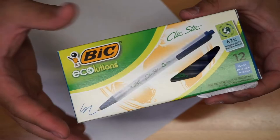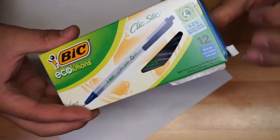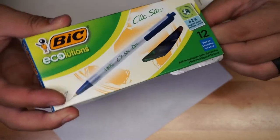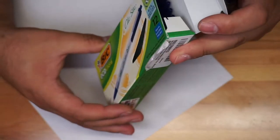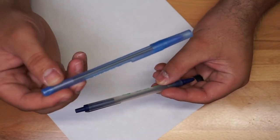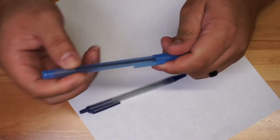So we're going to open it up. Like I said, you're going to have 12 of them in the box and we're just going to get one of them out. This is going to be retractable, so compared to something such as this regular pen where you take the cap out, this one's going to be retractable.